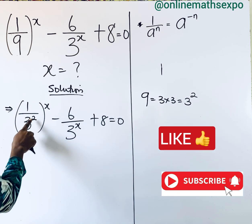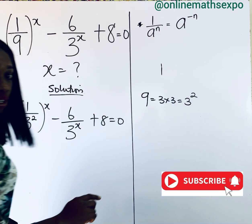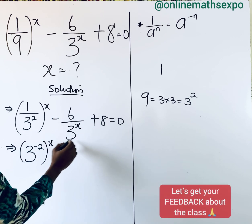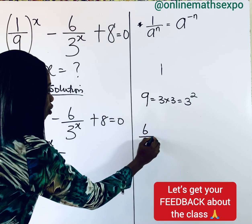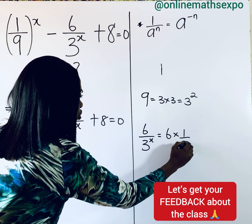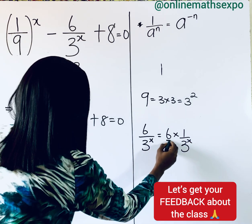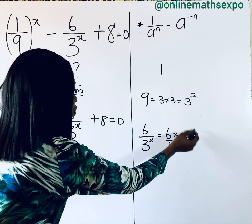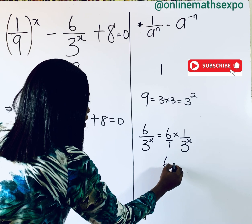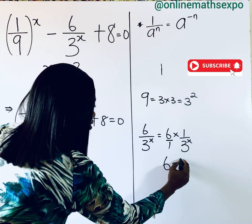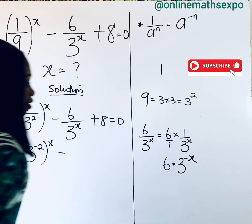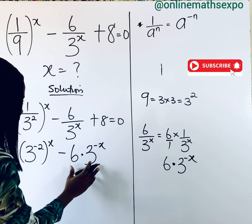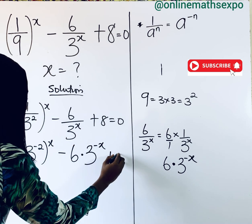At this point, this value inside the bracket — we can apply this principle. If you do that, we are going to have 3 to the power of negative 2, raised to the power of x, minus. You know that when you have 6 over 3 to the power of x, it means 6 multiplied by 1 over 3 to the power of x. Applying this principle, it means we are going to have 6 multiplying 3 to the power of negative x, as we have it here. We bring down plus 8 is equal to 0.